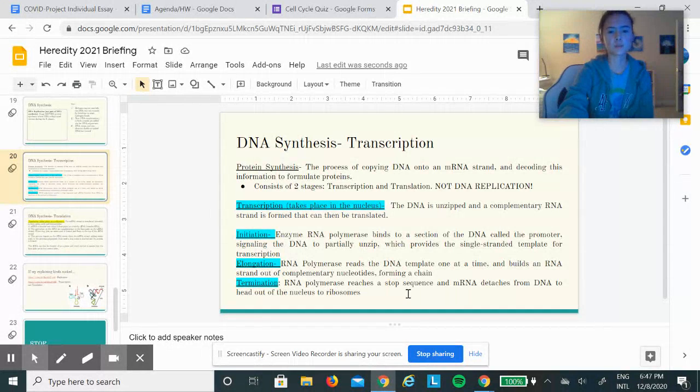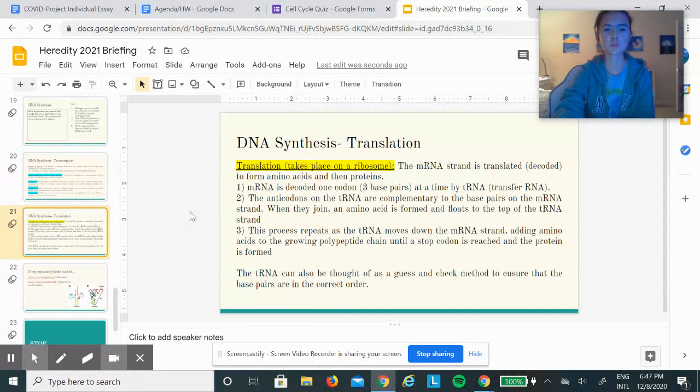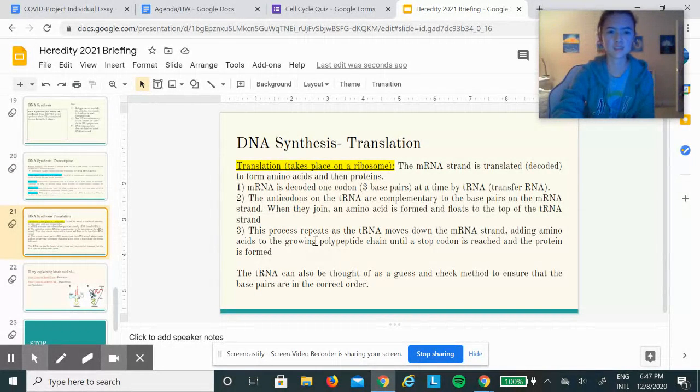Once the polymerase reaches a stop codon on the mRNA, it detaches and heads out to the ribosomes, which is the site of translation. Translation is the second step of DNA synthesis, where the mRNA strand is decoded one codon at a time by tRNA (transfer RNA).